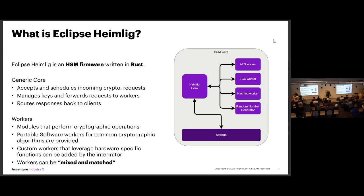From a very high perspective, it looks like this. It has a very generic core that accepts crypto requests and routes them to workers, and takes care that the responses reach the actual client. And then we have the workers — those are the ones that do the actual crypto work. You could have a crypto worker for symmetric encryption, or one for hashing, or one for signing. The nice thing about the architecture is that these can be mixed and matched. You might have a chip with a hardware-specific feature that you want to use — you write a hardware-specific worker and enable that functionality. Or if somebody needs another algorithm that your chip can't do in hardware, you can add a software worker. The algorithm is still computed in the secure environment of the HSM. It's maybe a little slower, done on the CPU, but the user doesn't know — he just sees an HSM, gives it a task, and gets a response.